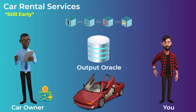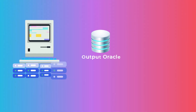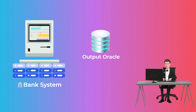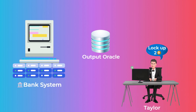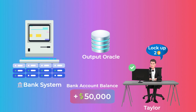Another use for output oracles is connecting blockchain transactions with our current banking systems. For example, a bank may deposit a loan payment into a customer's account once they lock up some of their crypto as collateral on the blockchain.